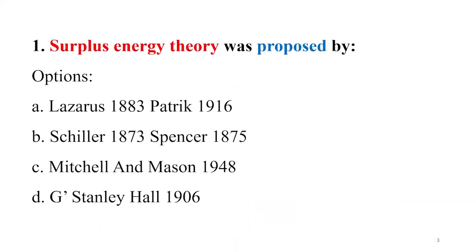The first question is: 'Surplus energy theory was proposed by...' The given options are: A. Lazarus 1883, Patrick 1916; B. Schiller 1873, Spencer 1875; C. Mitchell and Manson 1948; and D. G. Stanley Hall 1906.